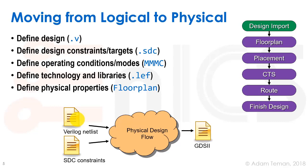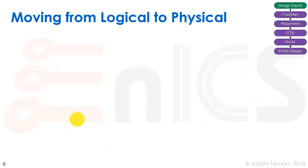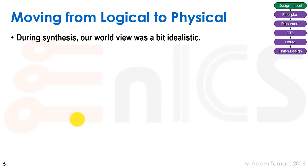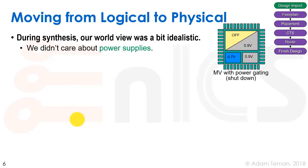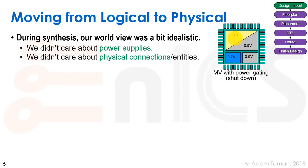During synthesis our world view was a bit idealistic. We didn't care about power supplies — we just knew there was some VDD and ground but didn't care about where the power was or how it gets everywhere. As you can see, more complex chips have different parts with different power domains, and maybe even the power is turned off in one of them — much more complex than what we dealt with before. We also didn't care about physical connections or clock non-idealities; we always set delta skew and delta jitter to 0.